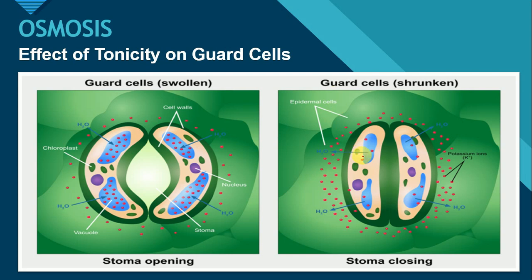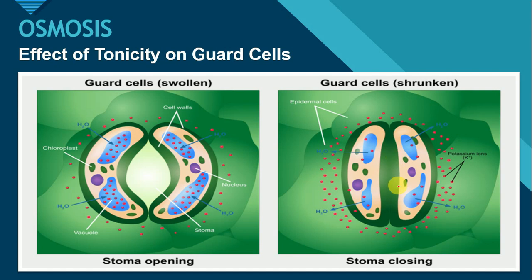But what happens at night? At night, there is no photosynthesis, so glucose ki concentration bhi yahaan par kam hooghi. As a result, water from the guard cell will move outside to the epidermal cells. Water ke yahaan nikal jane ki wajah se, leaf will become flaccid. Guard cells vaapis apni original shakal mein aajayenge, and the stomata will be closed here. There is no pore present, so stomata is closed here.